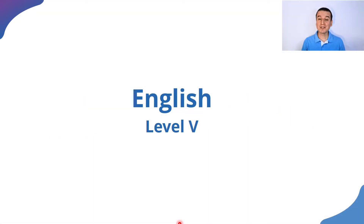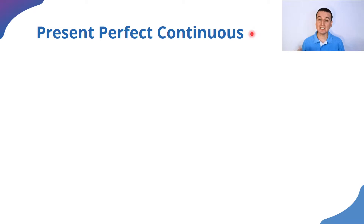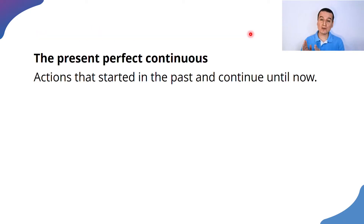Hello! Welcome to this new section. As I told you, we are going to use a new verb tense to talk about actions that happened in the past. The name of this verb tense is the present perfect continuous, and this is the verb tense that is used to describe actions that started in the past and continue until now.